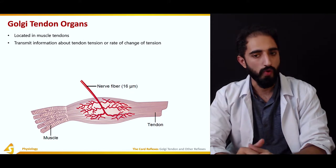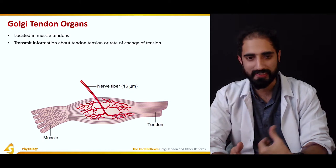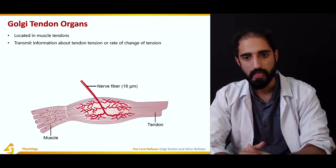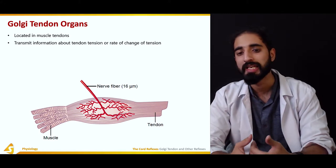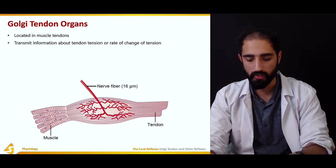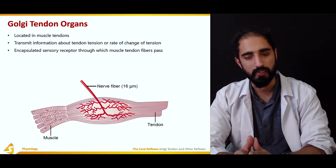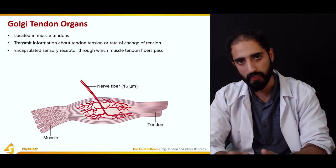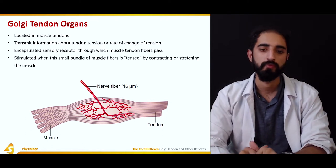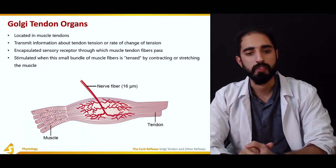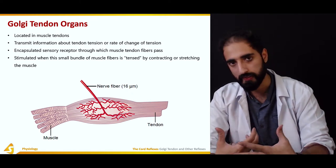They transmit information about tendon tension or rate of change in tension. If you are talking about the tension itself, this is the static response of the Golgi tendon organ. If you are talking about the rate of change in tension, this is the dynamic response. These are encapsulated sensory receptors through which muscle tendon fibers pass, located in the muscle tendon, not in the muscle belly itself. They are stimulated when a small bundle of muscle fibers is tensed by contracting or stretching of the muscles and sarcomeres.